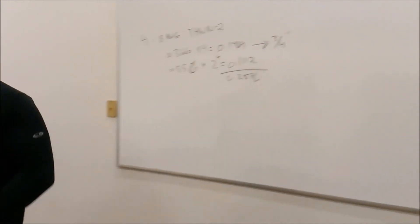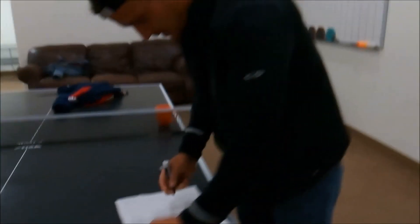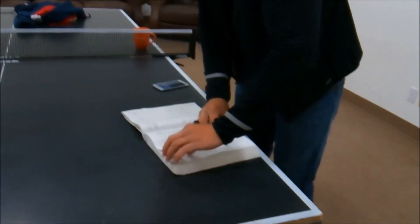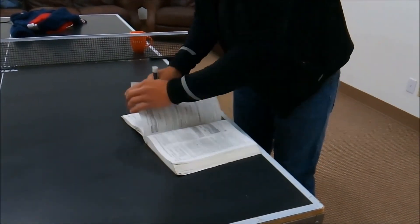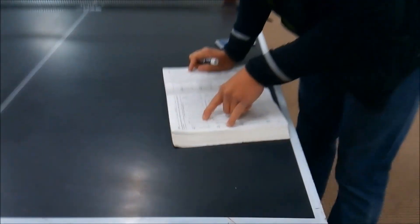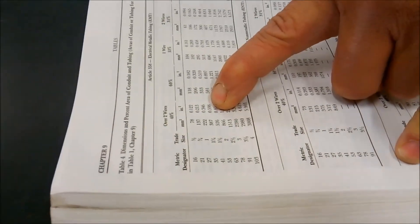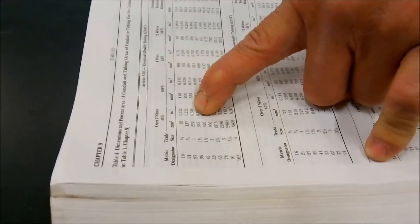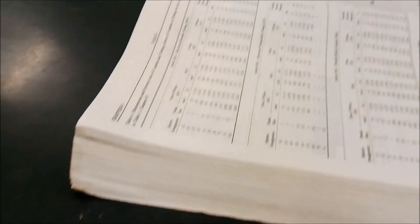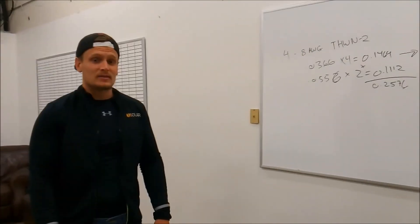And then go back to our EMT table here. And we're looking for an area over 2 wires, so 40% of the area that is equal to .256 or greater. And that looks like we jump up to 1 inch conduit at that point. And that's how you do conduit fill.